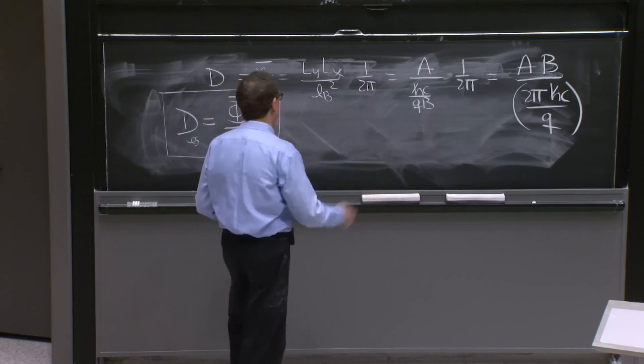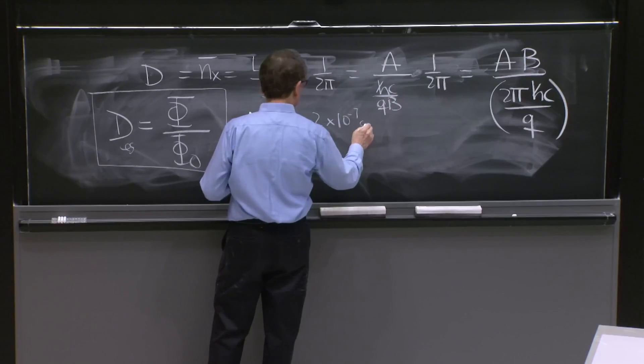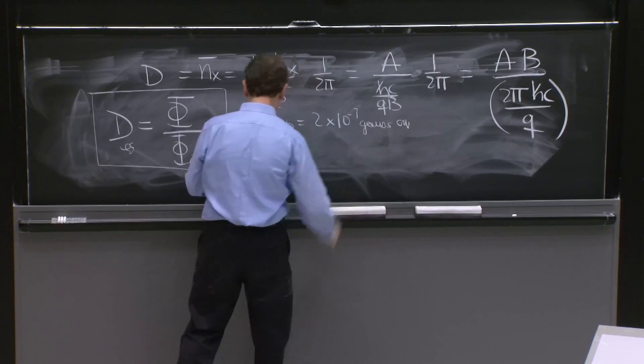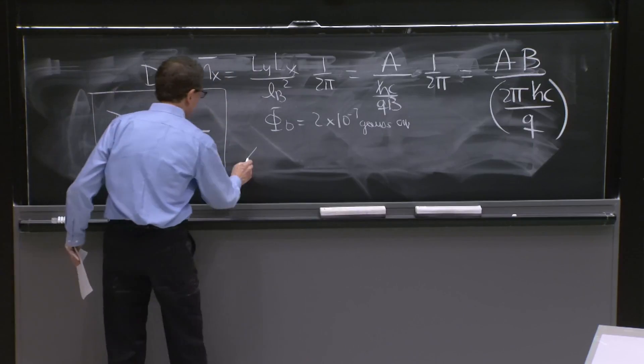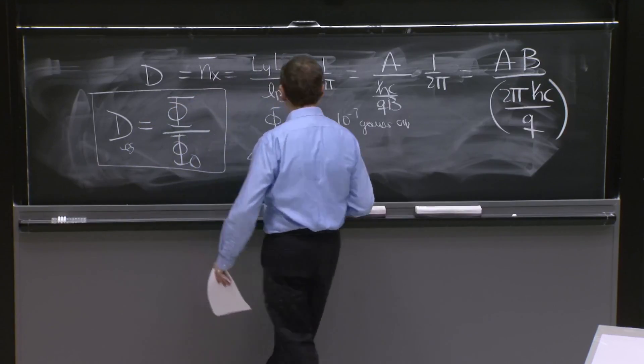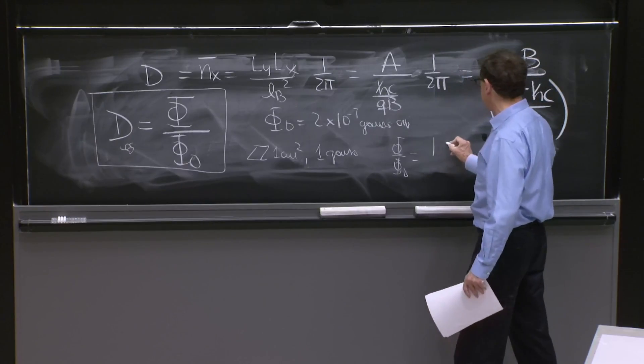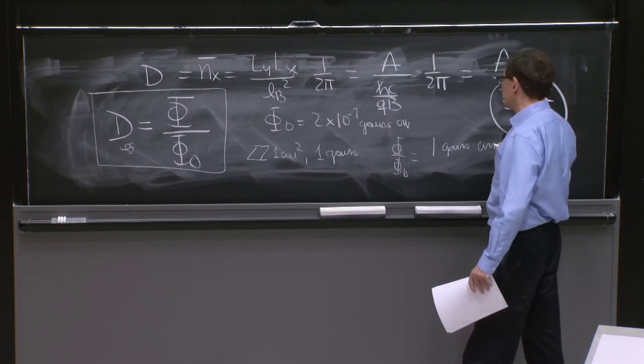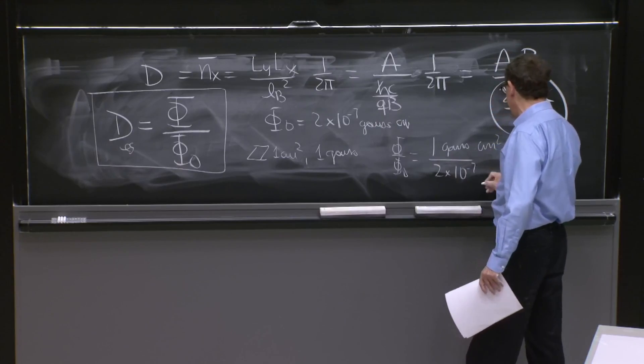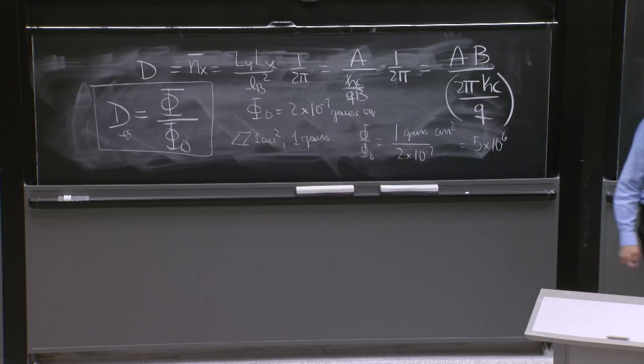So in particular, given that we have that number, that φ_naught is equal to about 2×10^(-7) Gauss times centimeters squared. If you have a sample of 1 centimeter squared, and you put 1 Gauss, the value of the flux over φ_naught would be 1 Gauss centimeter squared over 2×10^(-7), same units. So it's about 5 million states. That's just to give you an idea of how big the numbers are. That's the degeneracy.